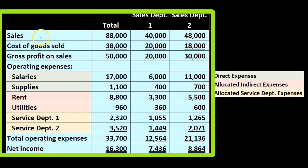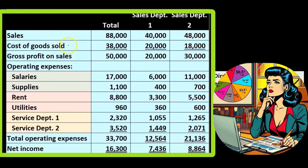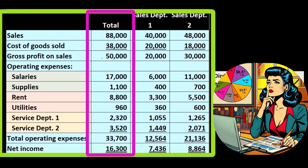We've got the sales up top, which is going to be the revenue, the cost of goods sold — so we're going to subtract this out. Sales minus cost of goods sold gives us the gross profit on sales. And then typically in a normal income statement, we would have the operating expenses.